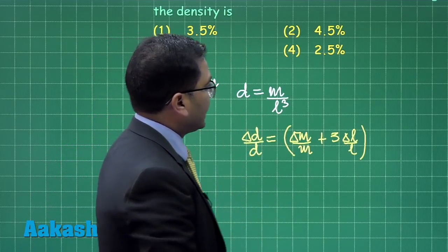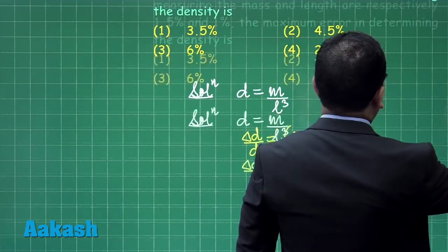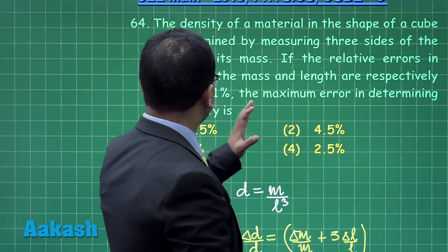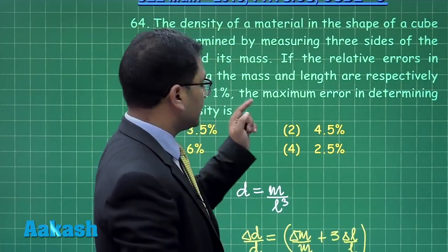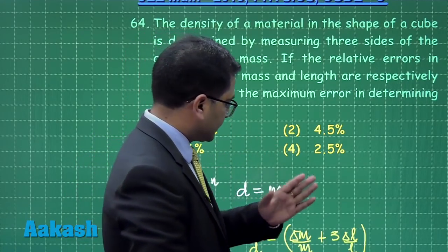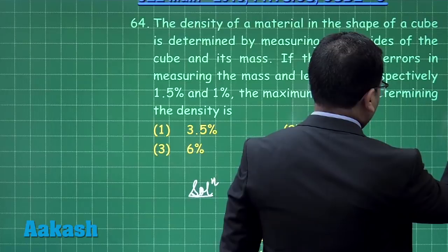Now let us just put the value of percentage error in mass and length. They are given here: the percentage errors are 1.5% and 1%. Just remember the value; I am going to scroll it down.